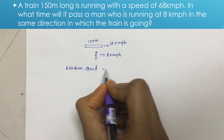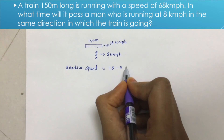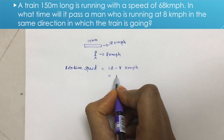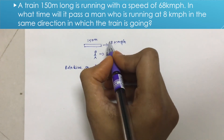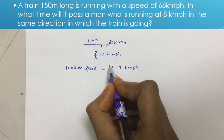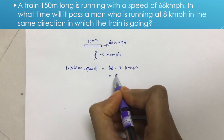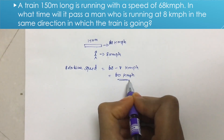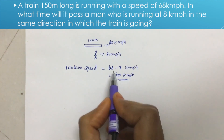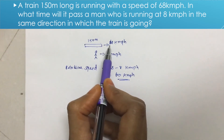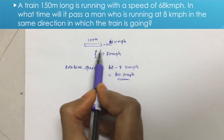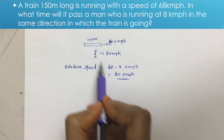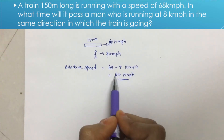The relative speed equals 68 minus 8 kmph. The actual speed of the train is 68 kmph, and relative to the man, the speed is 60 kmph.